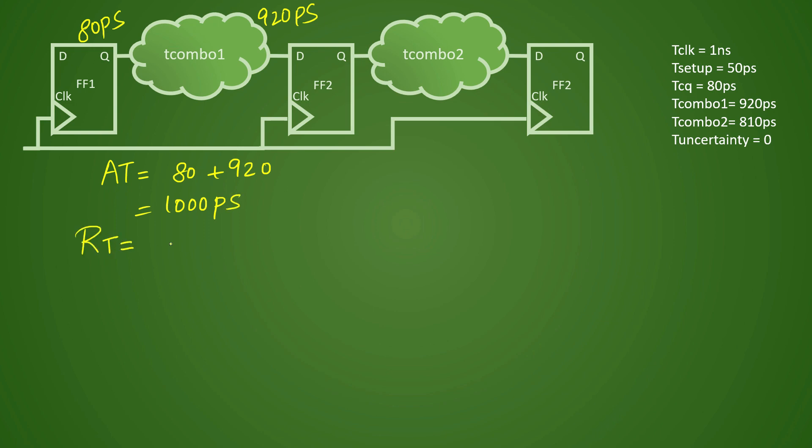Now your required time is your T clock. So T clock is 1 nanosecond, that is equivalent to 1000 picoseconds, minus your T setup. T setup is 50 picoseconds. And after that, you have minus uncertainty portion, but in this case we do not have any uncertainty, so it will be 0 picoseconds and it will be 950 picoseconds. Slack, if you have already calculated, will come out to be minus 50 picoseconds. Why? Because it is RT minus AT, and that will be 950 minus 1000. This was the case for your T combo 1.